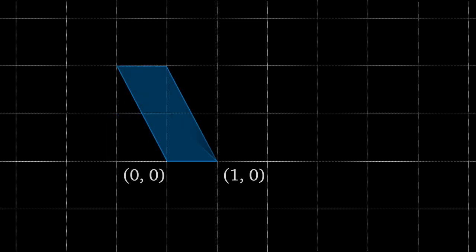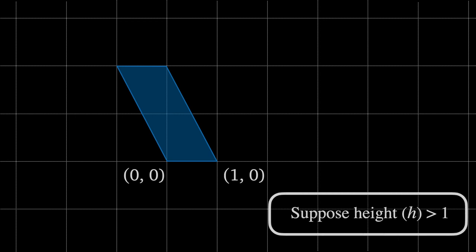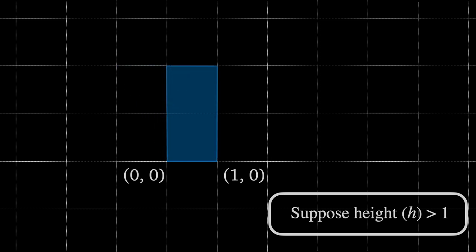Okay so let's suppose the height of the parallelogram is greater than 1. In this case you can see that there is a point in the interior of the parallelogram and so it's not primitive. In this case we see there are two points on the boundary of the parallelogram, again making it not primitive.